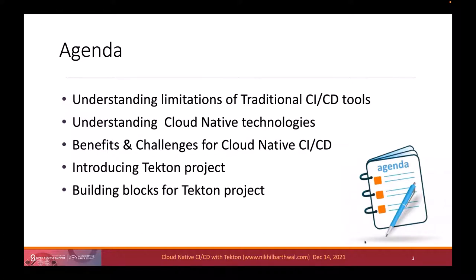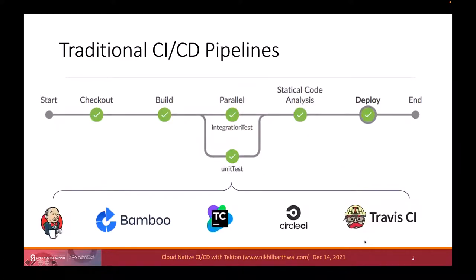Let's start with traditional CI/CD tools. Any pipeline is essentially a directed acyclic graph of tasks — you have different tests, builds, analysis, and deployments. Each task itself consists of a sequence of steps. There are a whole lot of tools in the market: Jenkins is by far the most popular open source one, then Bamboo, TeamCity, CircleCI, Travis CI, and others.